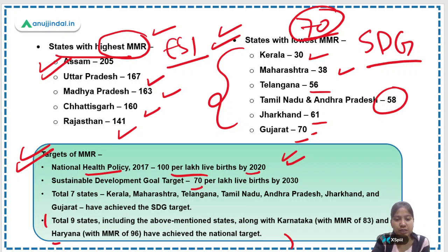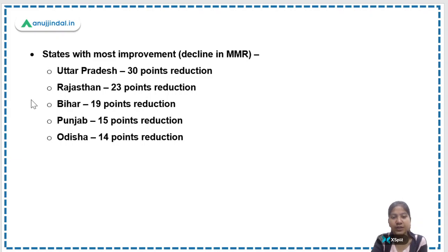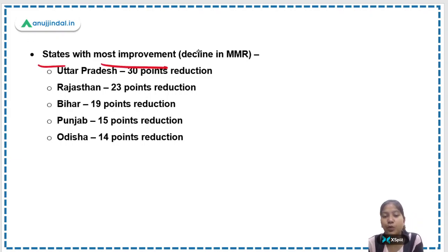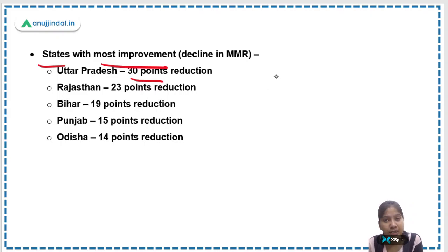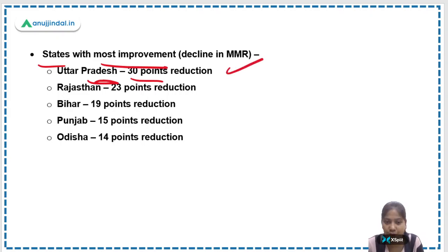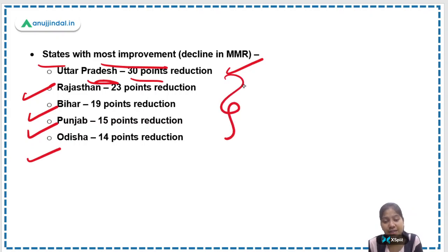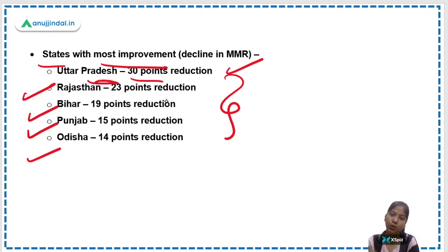The next part of this question mentions the states which have improved the most. Uttar Pradesh has shown remarkable improvement, though its overall MMR is still above the national health policy target. The five states showing most improvement in declining MMR are Uttar Pradesh, Rajasthan, Bihar, Punjab, and Odisha.